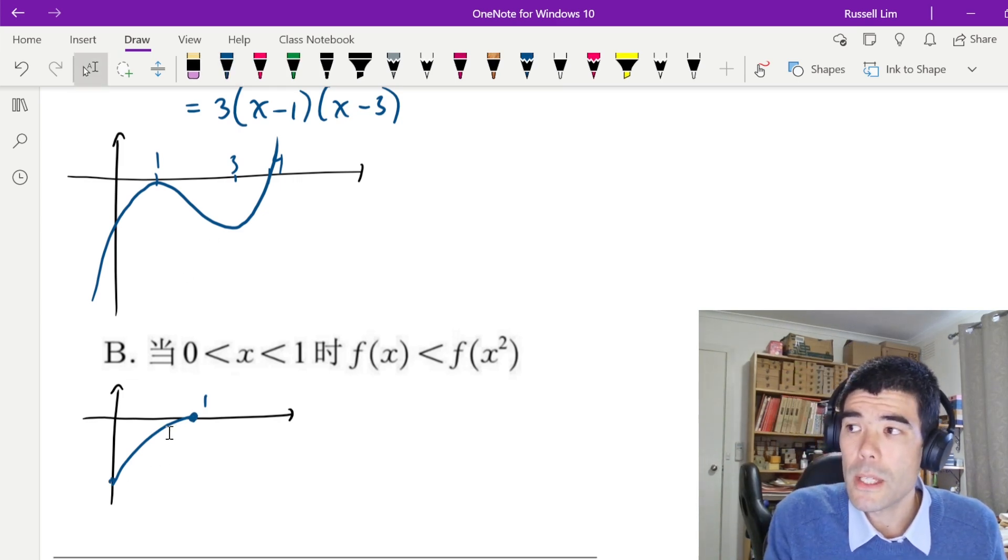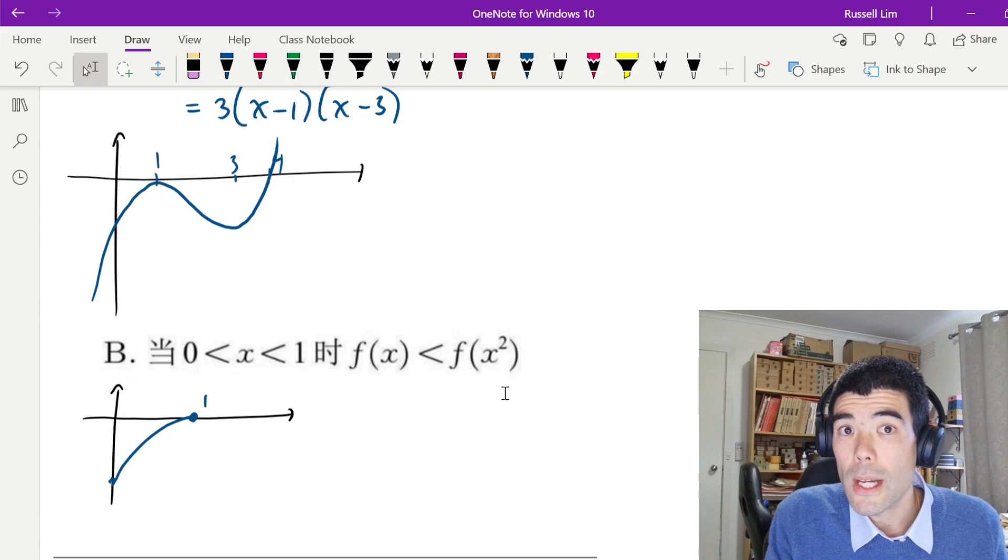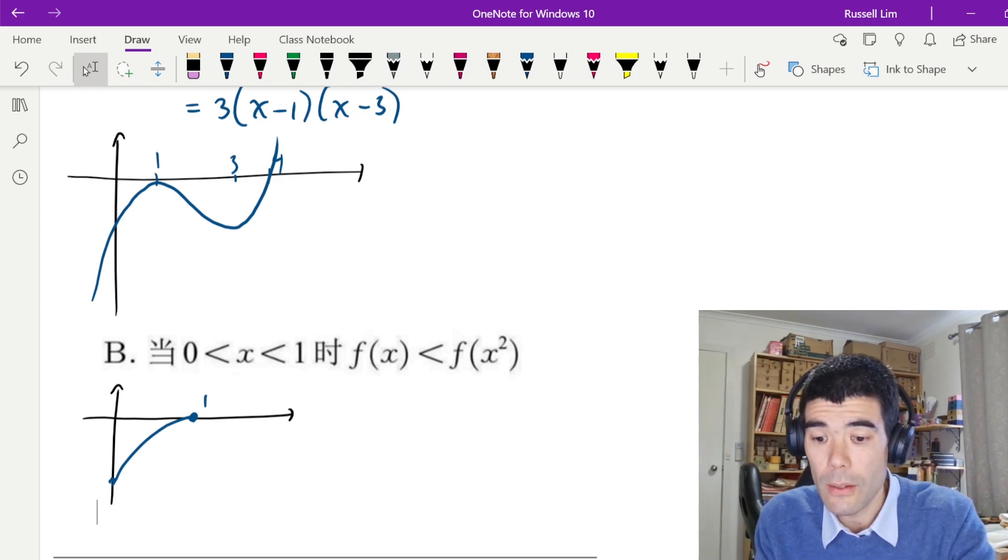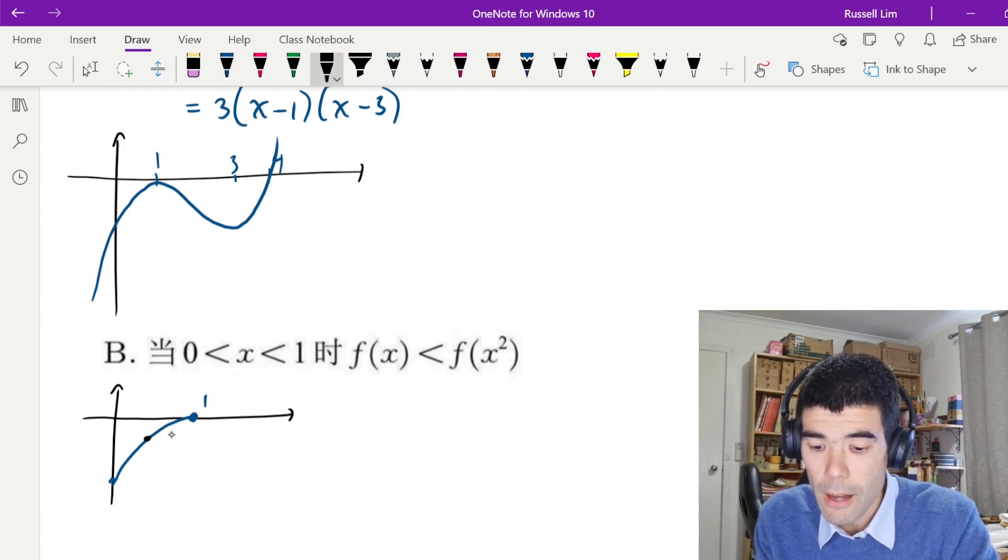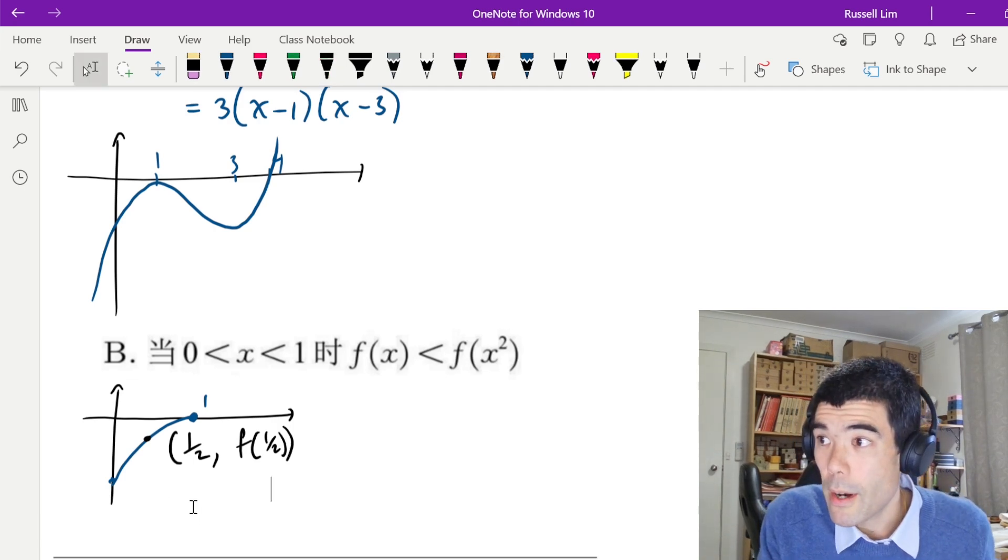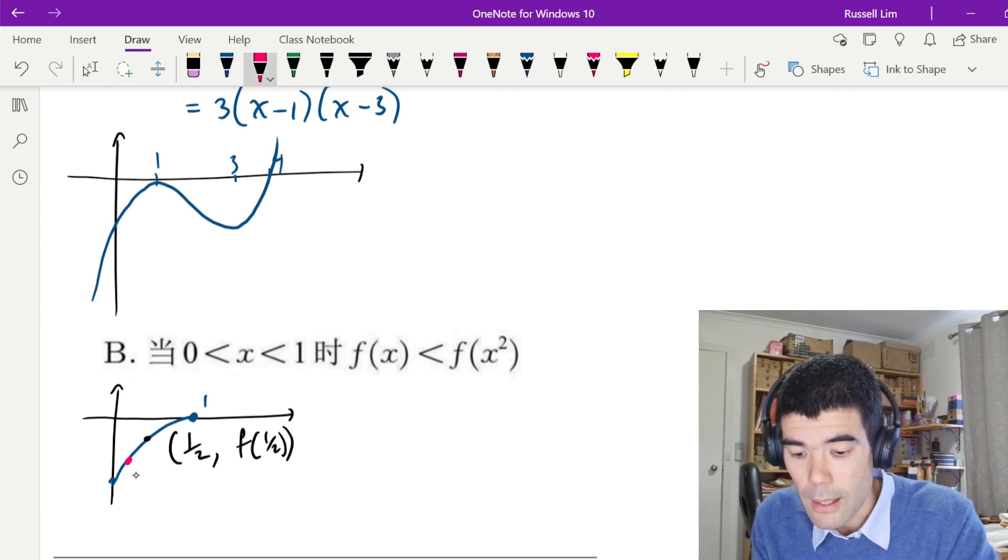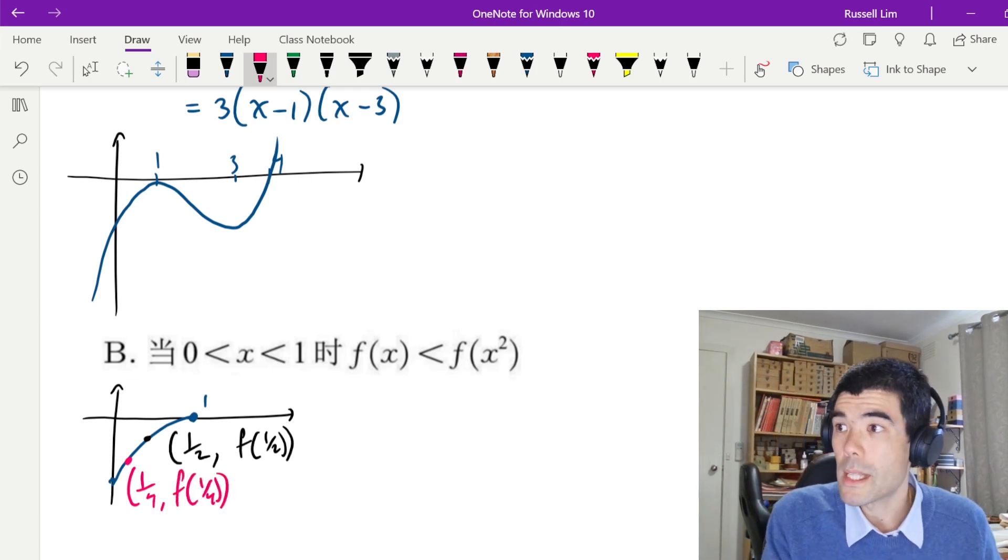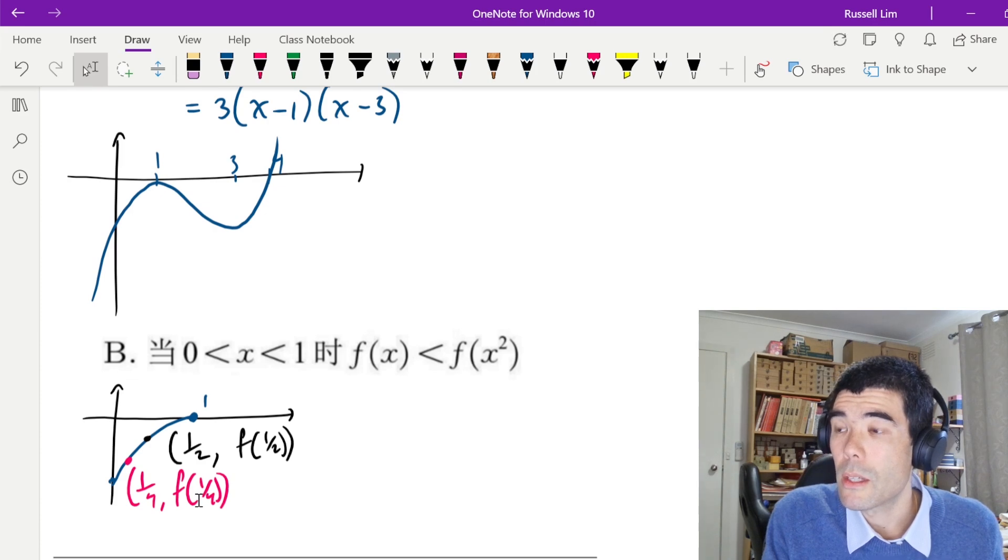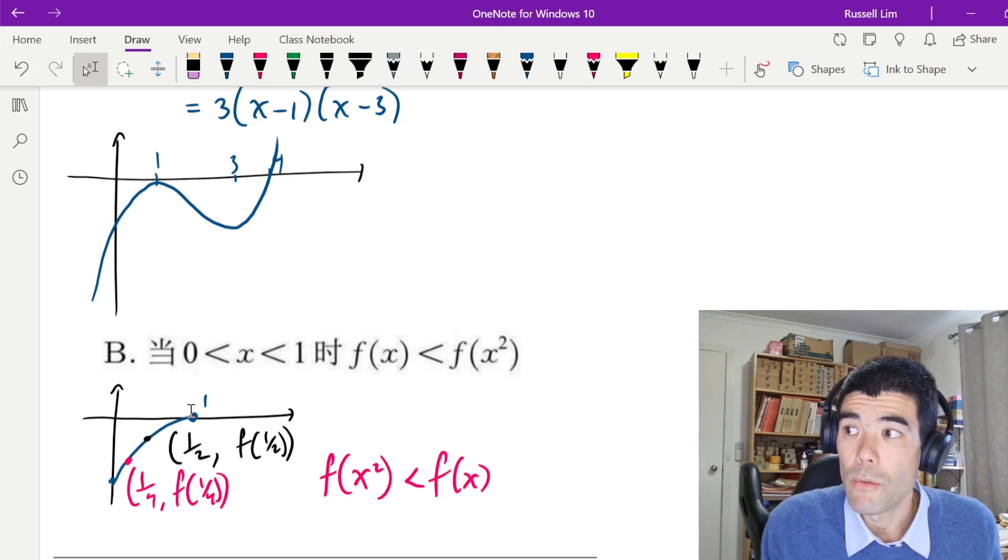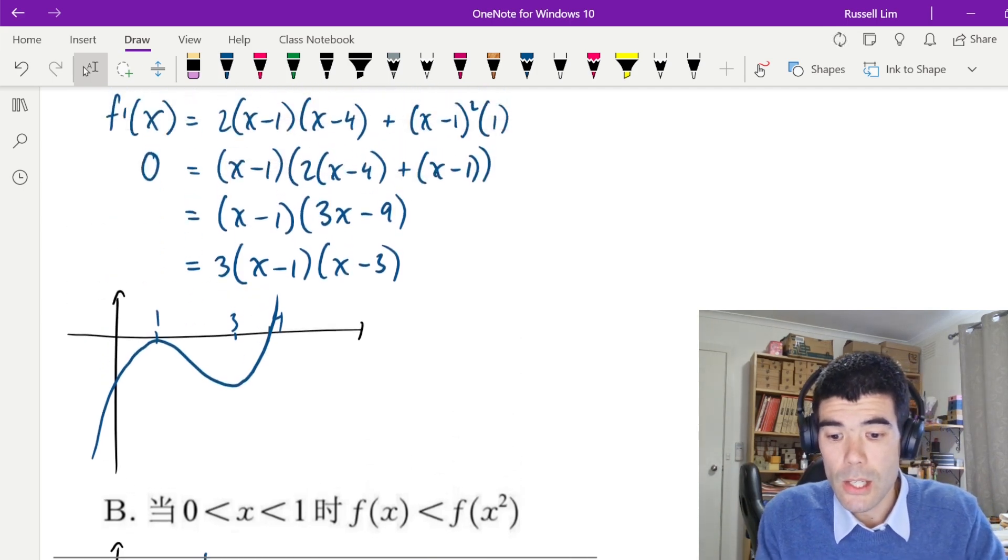And in this region of the graph, if we imagine we take any x value and then square it, what's going to happen is the x value, well, this square is going to be smaller than the original x value. For example, if I take a half and whatever the y value is there, when I square a half, I get a quarter. It's down here. So what we can see is the y value of the quarter is actually less. And that's always going to happen because this function is going uphill here. So if we decrease the x value, you actually decrease the y value too. So option B there is actually false.